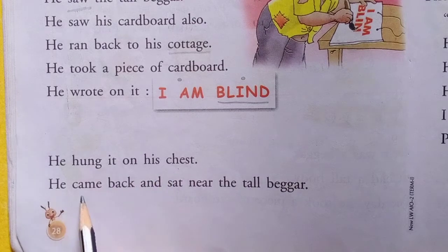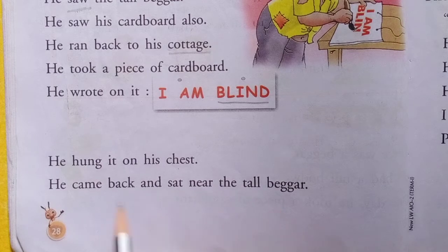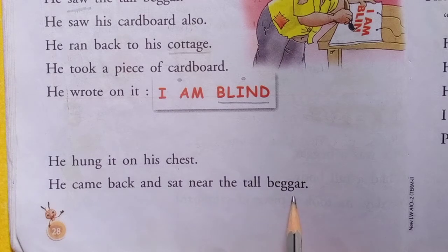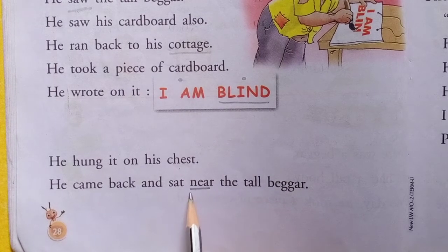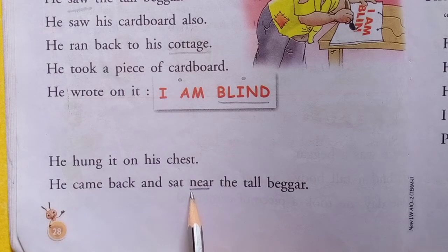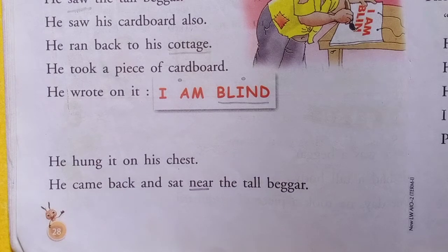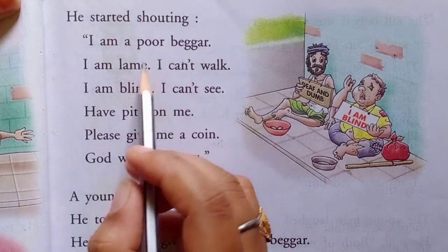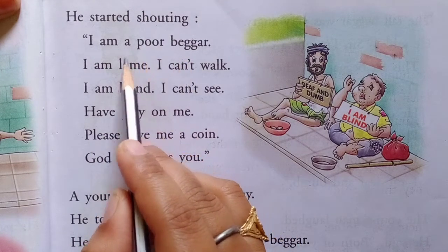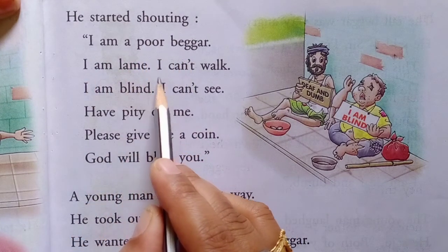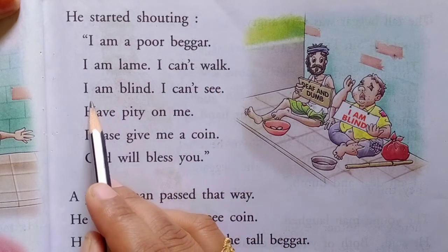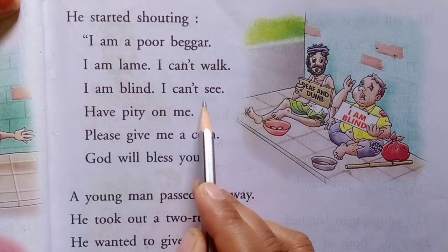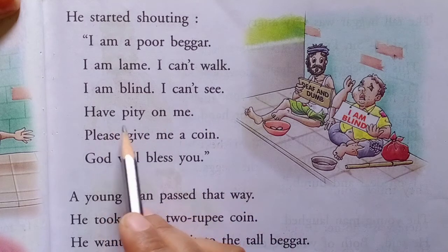He hung it on his chest. He came back and sat near the tall beggar. Near ka hindi mein arth hoga paas. He started shouting: 'I am a poor beggar. I can't walk. I am blind. I can't see.'